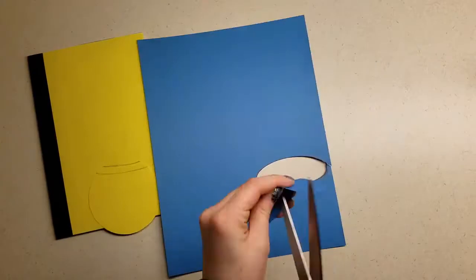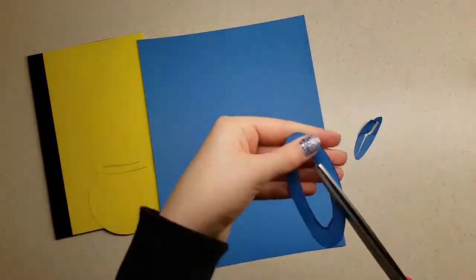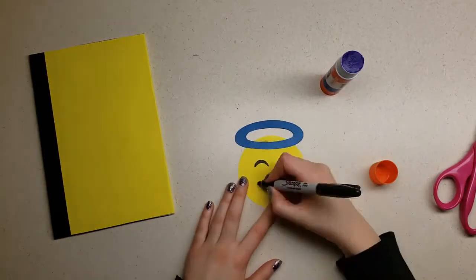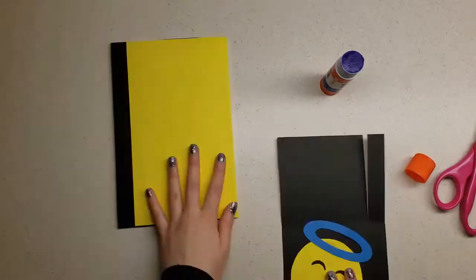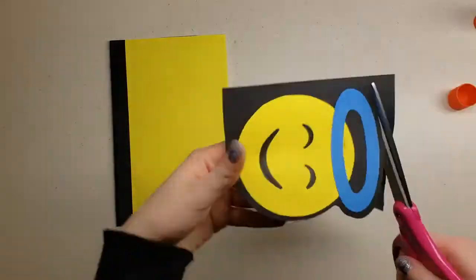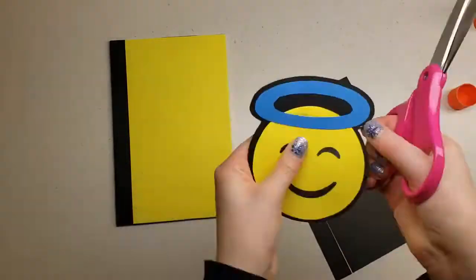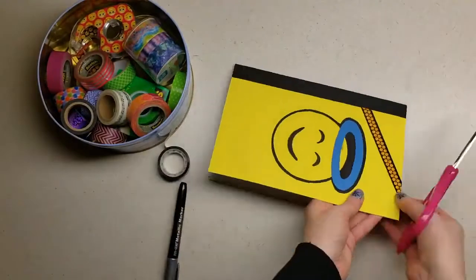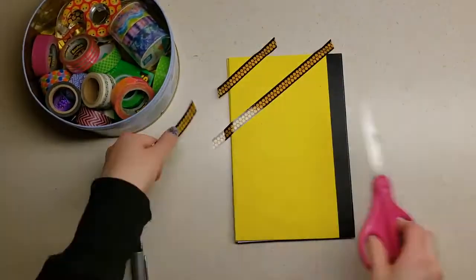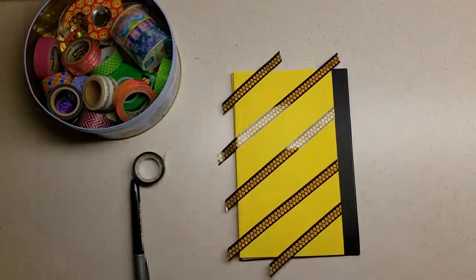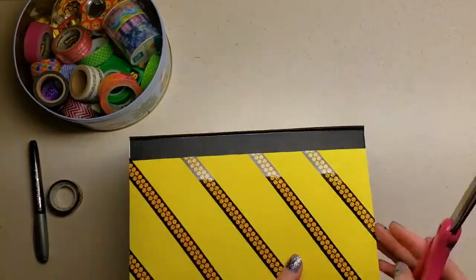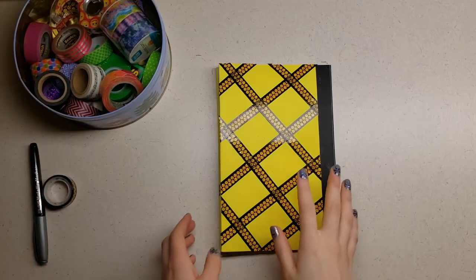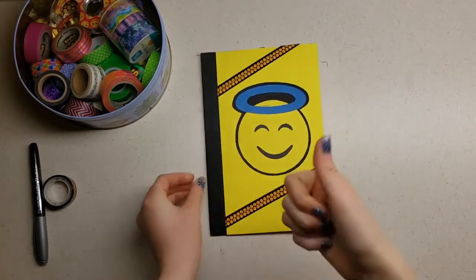I decided mine was looking a little plain, so I wanted to add my favorite emoji, the angel emoji, to the front cover. To personalize yours, you could add your favorite emoji, draw a design on the front, or write your name on the front. You could add stickers, make a photo collage, use some fun pattern duct tape, or even use some washi tape like I am here. And then I went and did the rest of the washi tape off camera. Once you're satisfied with your front and back covers, you're all done.